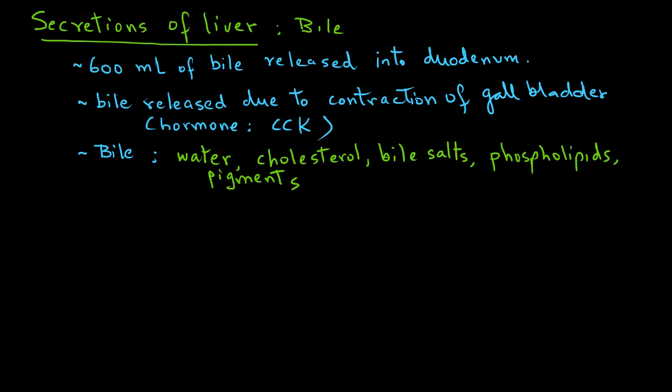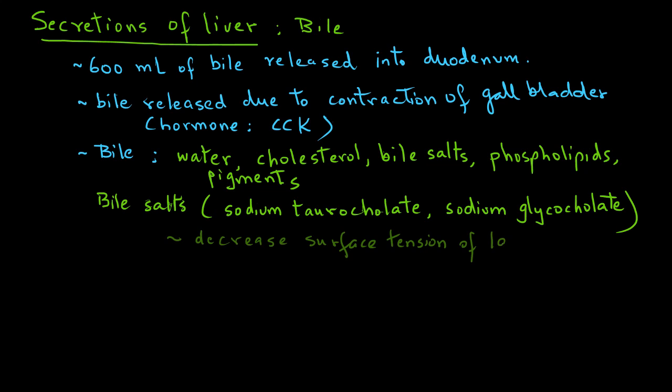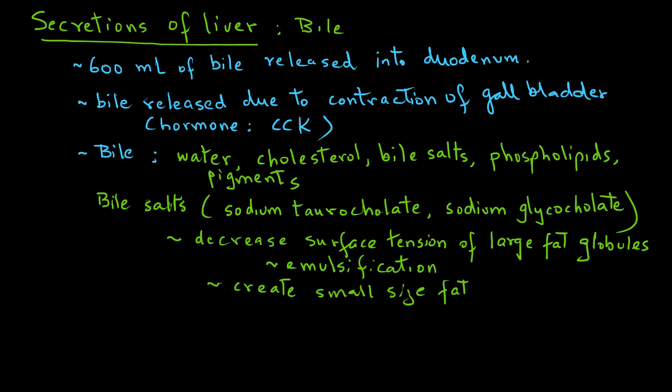The bile salts include sodium taurocholate and sodium glycocholate. Their function is to decrease the surface tension of large fat globules. In other words, bile salts help emulsify fat and create small size fat droplets. As we noted when looking at the activity of pancreatic lipase, for its action it needs small size fat droplets, so bile salts are helpful in creating those.